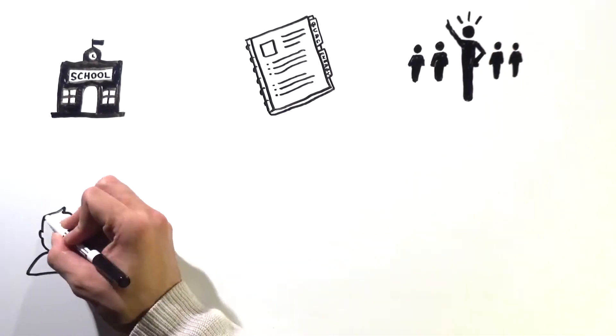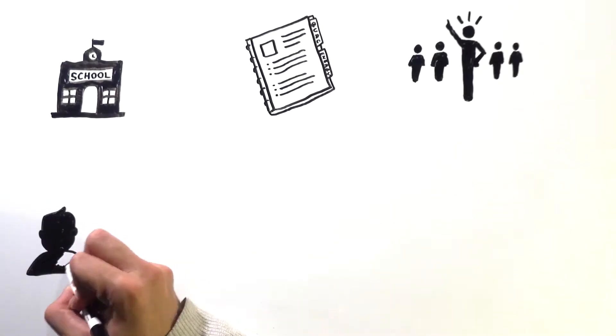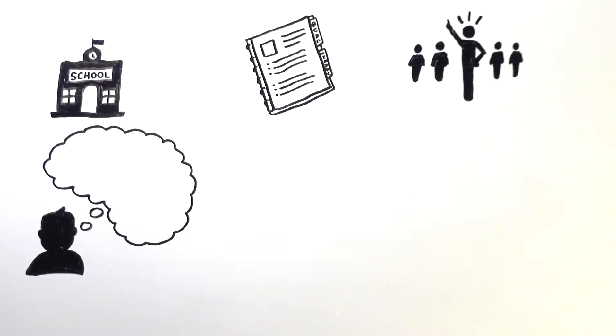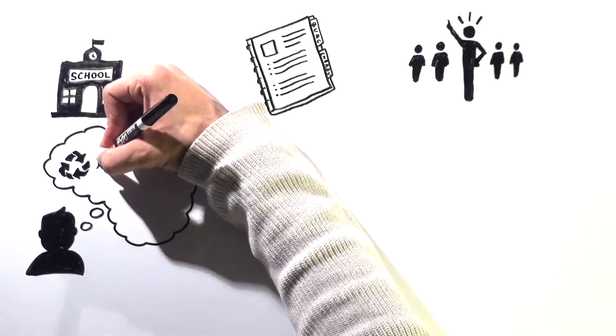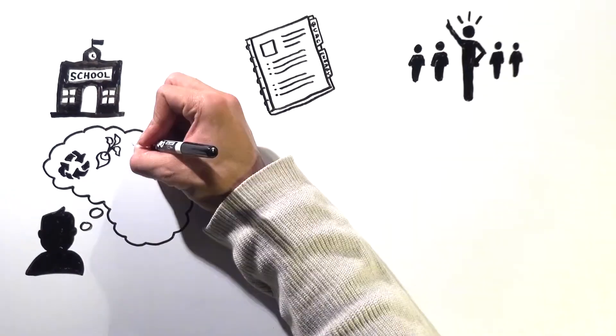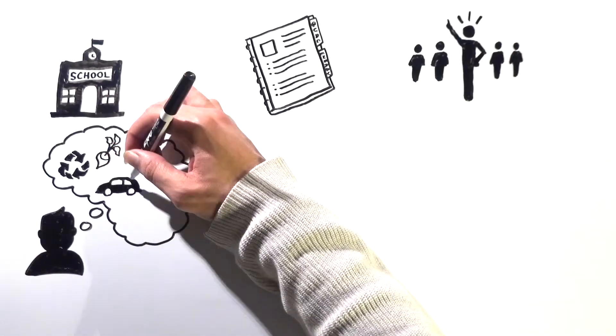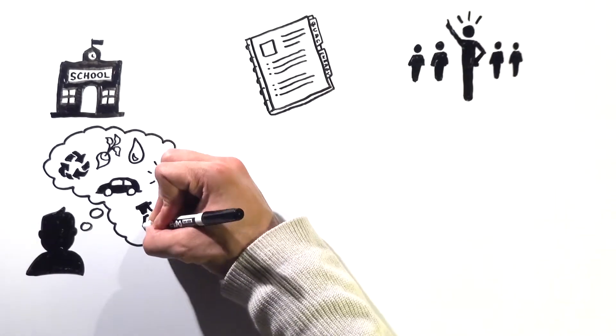Perhaps you've been looking for some guidance when trying to carry out an environmental action project at your school. Washington Green Schools offers projects in six different environmental categories, including waste and recycling, school grounds and gardens, water, transportation, energy, and healthy school buildings.